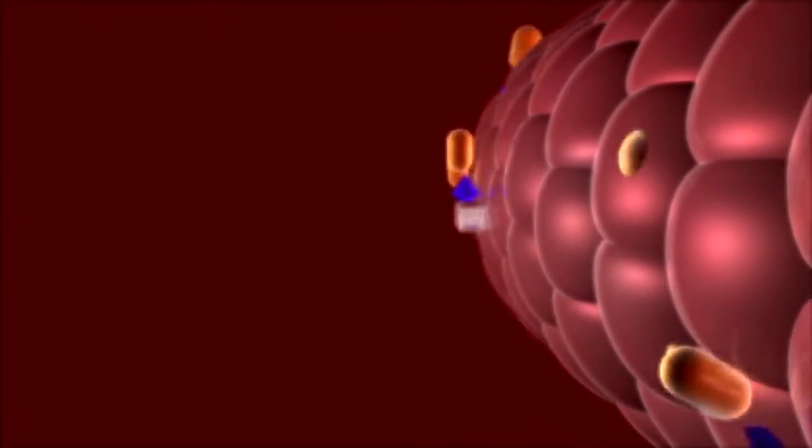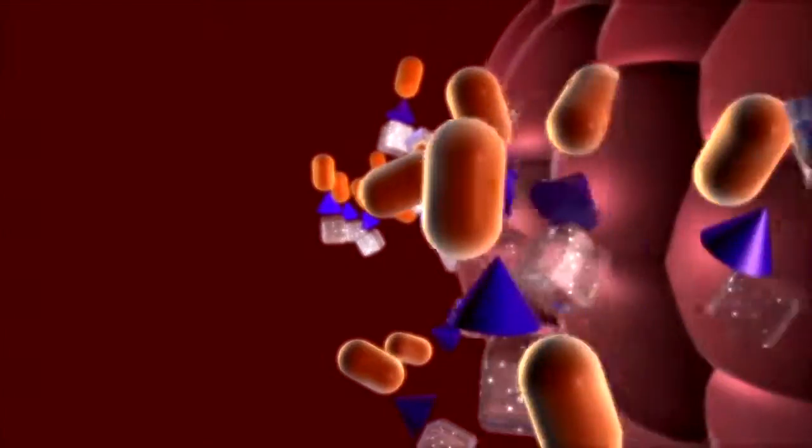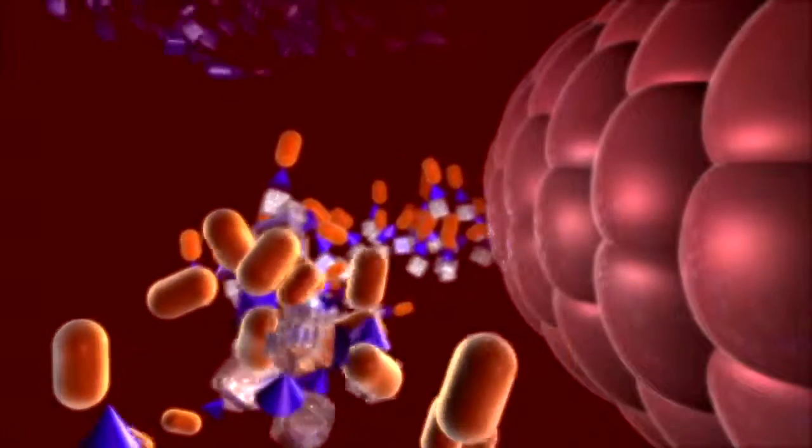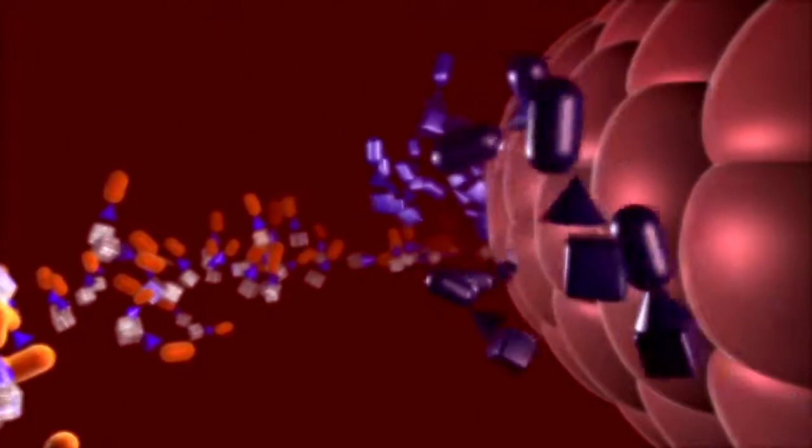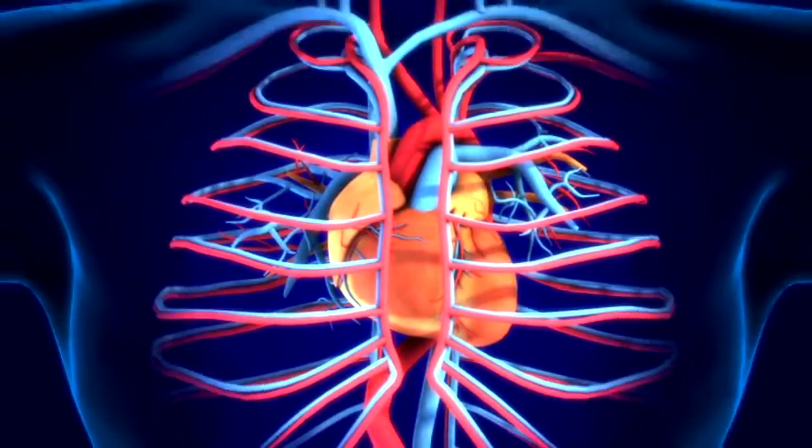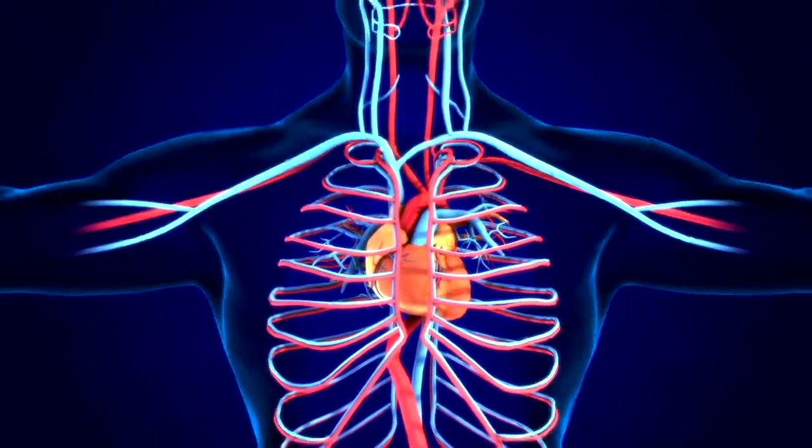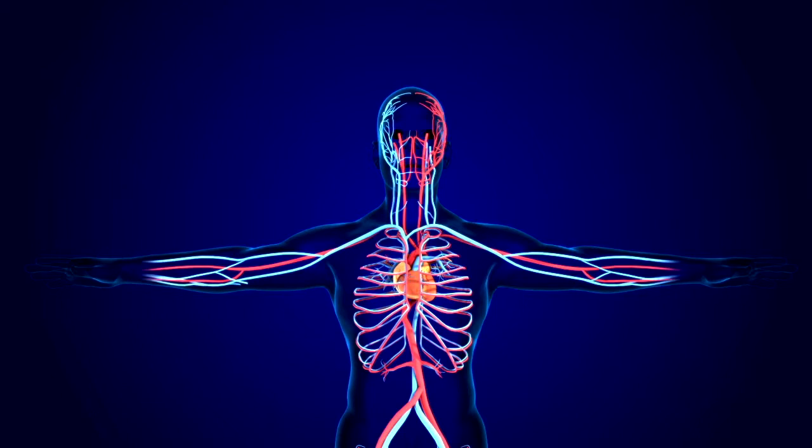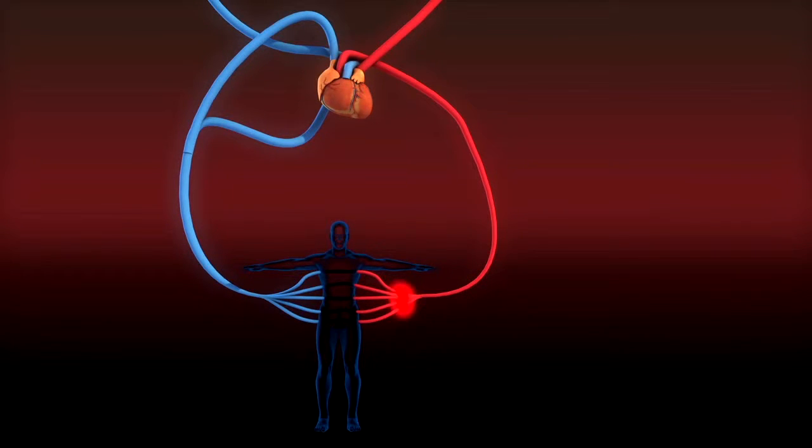At the same time, the blood in the capillaries collects carbon dioxide and other waste from the body cells. Capillaries which contain carbon dioxide-rich blood join together to form small veins. The veins, in turn, unite with each other to form large veins until the blood from the body is finally collected into the large superior and inferior vena cava that open into the right atrium.